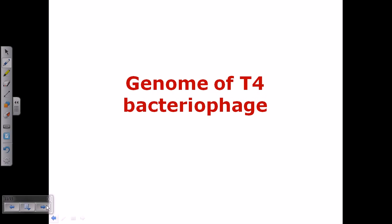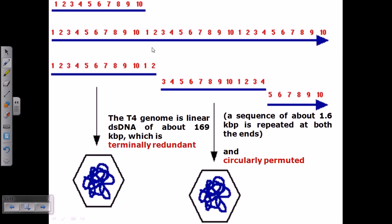Now if we look at the genome of T4 bacteriophage, the uniqueness of the bacteriophage T4 genome is that it has two important properties. One is they are terminally redundant, and second, they are circularly permuted. What do you mean by circular permutation? That means the circular formation of the phage can be easily possible due to complementary bases that are present in both terminals.